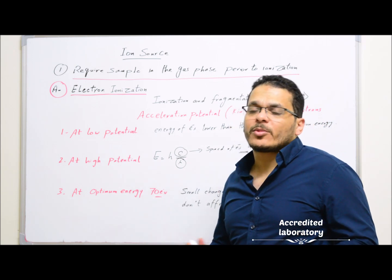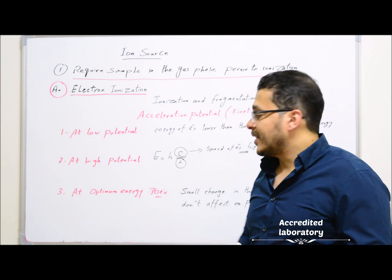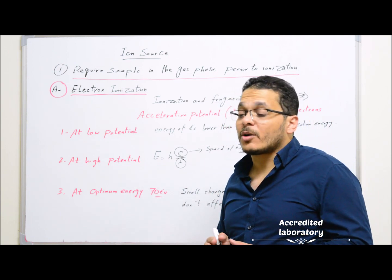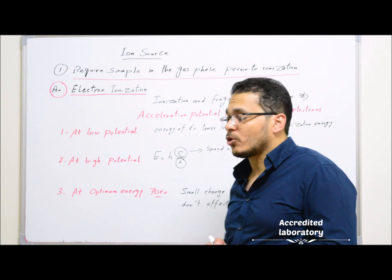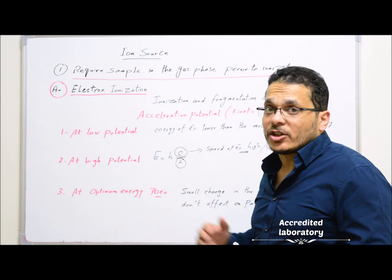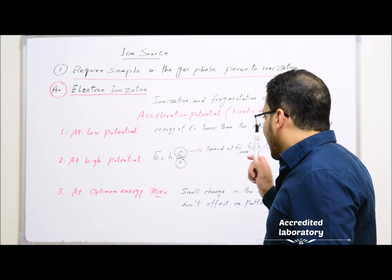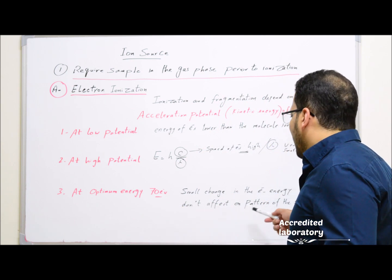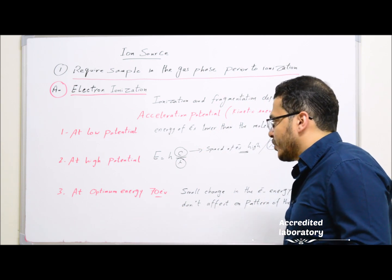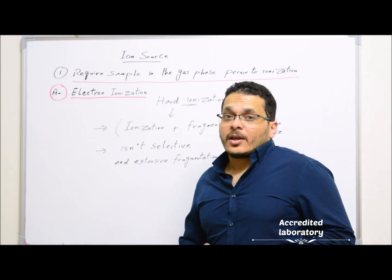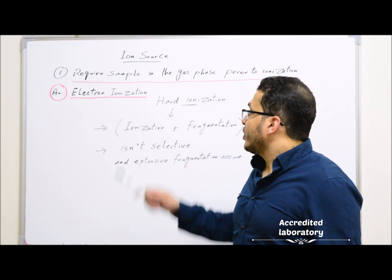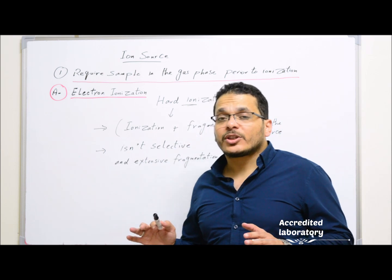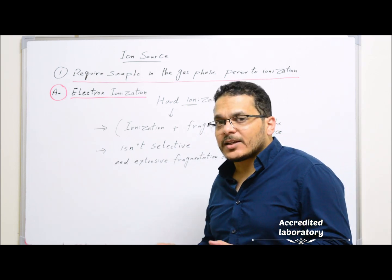At 70 electron volts, which is the optimum energy, only sufficient energy can be transferred to overcome the ionization potential of most organic compounds, and ionization of molecules will happen. Also, a small change in electron energy will not affect the pattern of the spectrum. Electron ionization is considered to be hard ionization because ionization and fragmentation both take place inside the ion source.